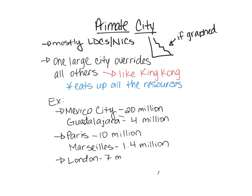Another MDC example is London, which has about 7 million people, while the next biggest city, Birmingham, has only about a million. London is the most well-known city in the UK, and that makes sense — that's where all the people are. It's a primate city.